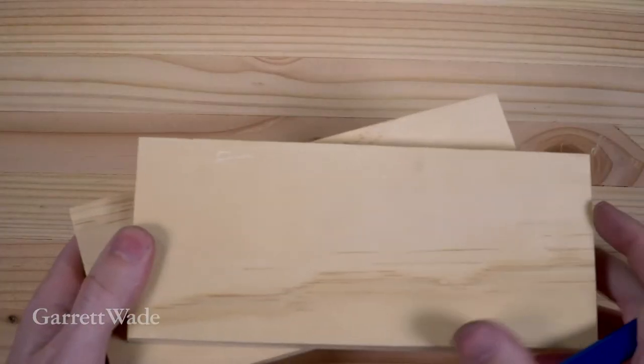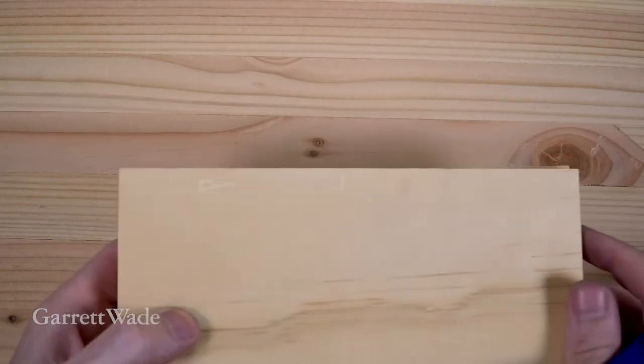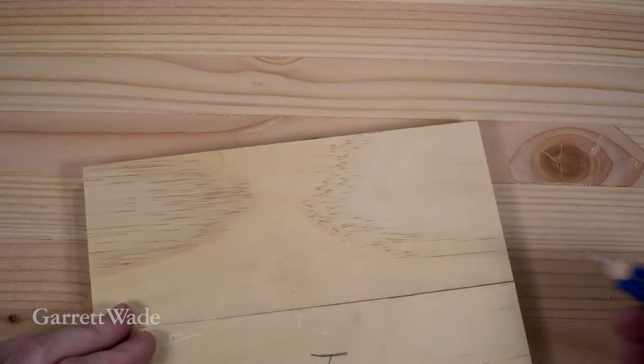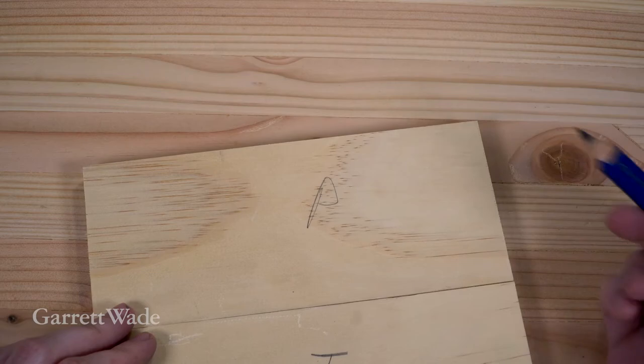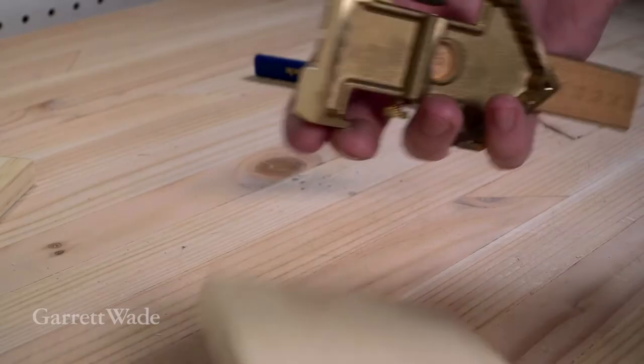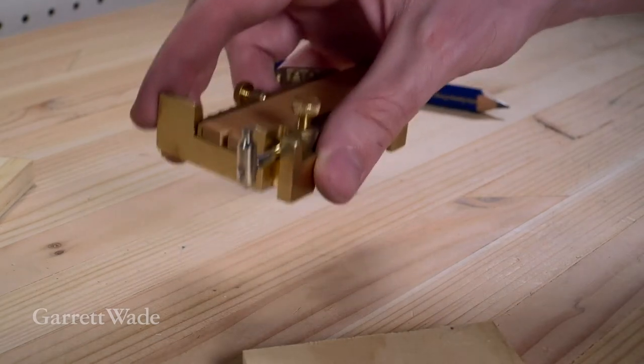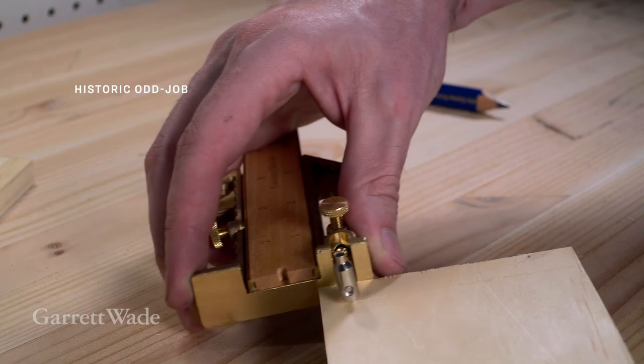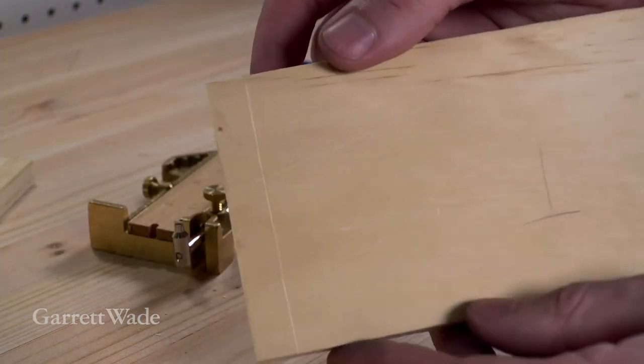So we're going to start just with pine, just soft easy wood to get started with, and we're going to mark one side T for tails and P for pins. I'm going to strike a line here. You can actually do the same thing with the scribe on the odd job.